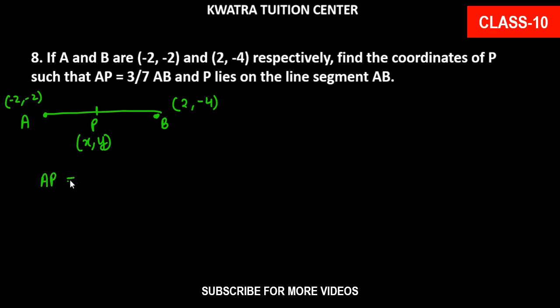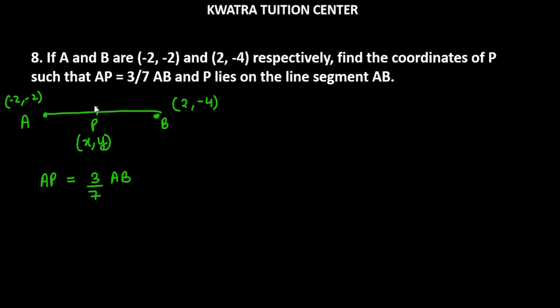We have one more thing given to us, which is AP is equal to 3 over 7 of AB. AB is divided into 3 parts. And about PB we don't know, so we want to find the ratio for PB. Now how will PB's ratio be calculated?